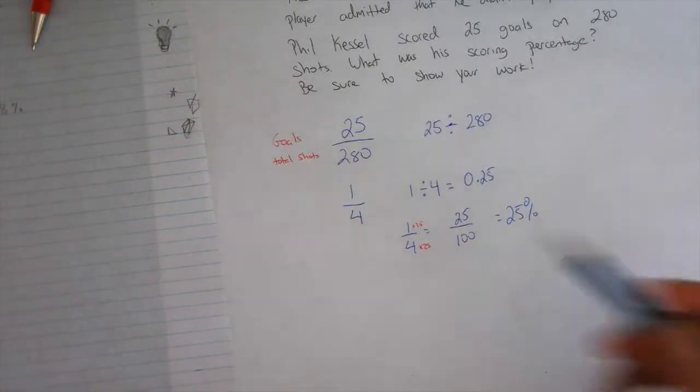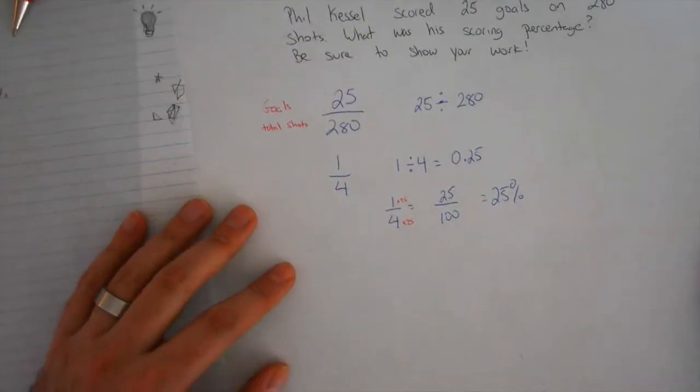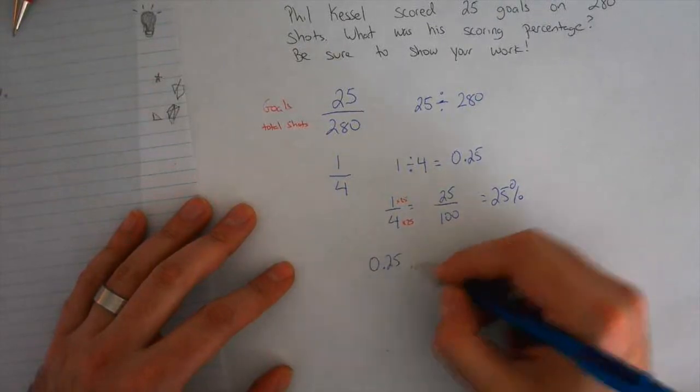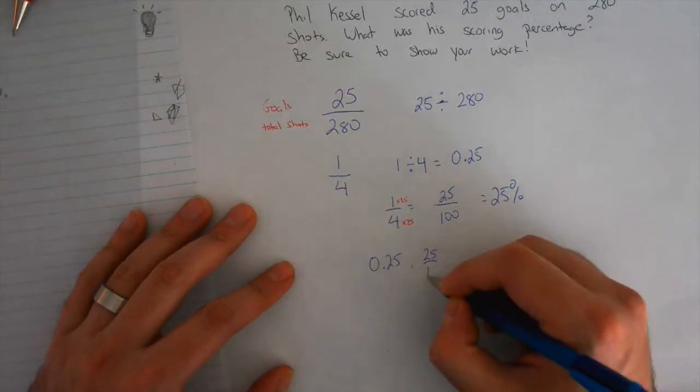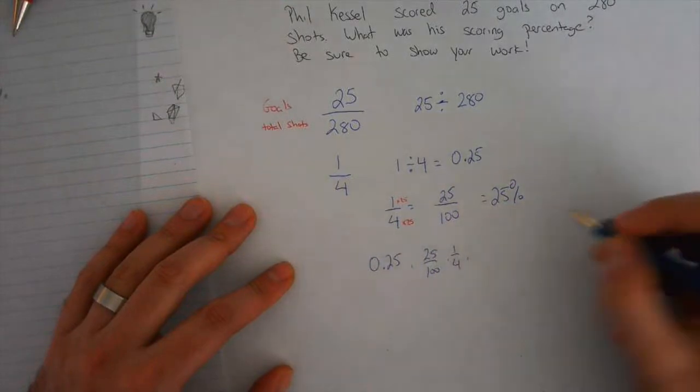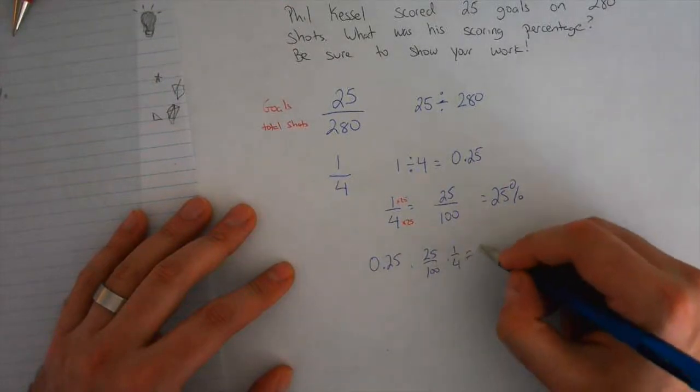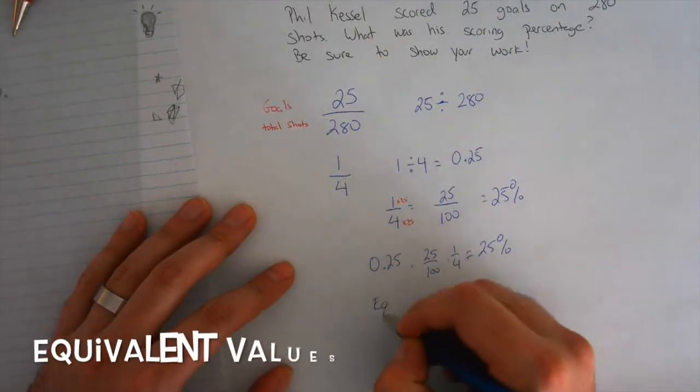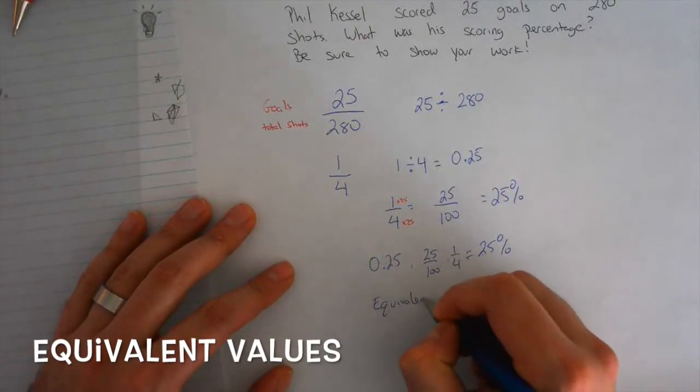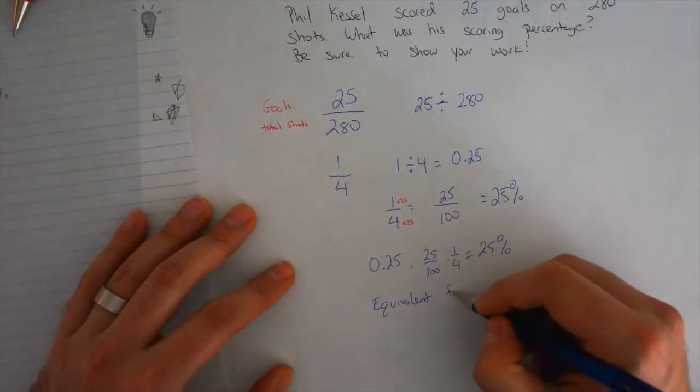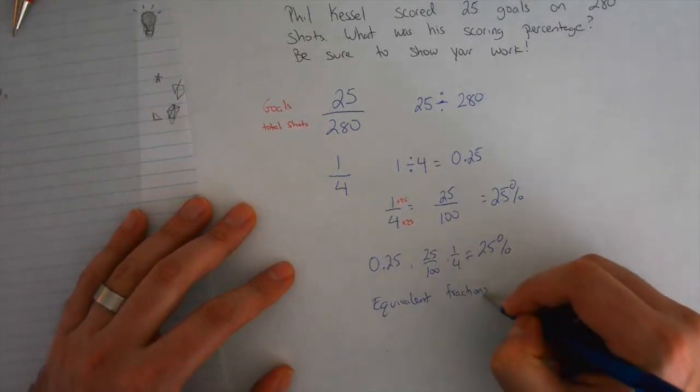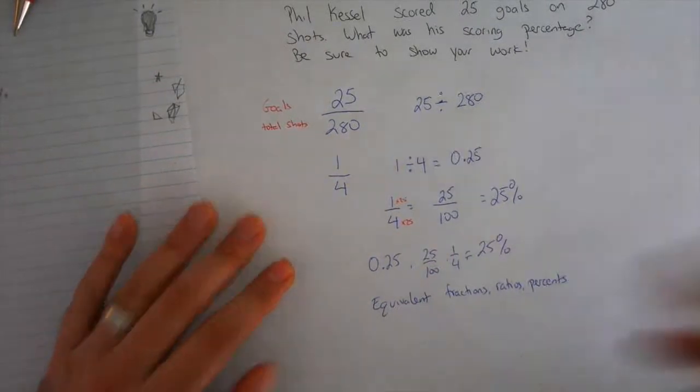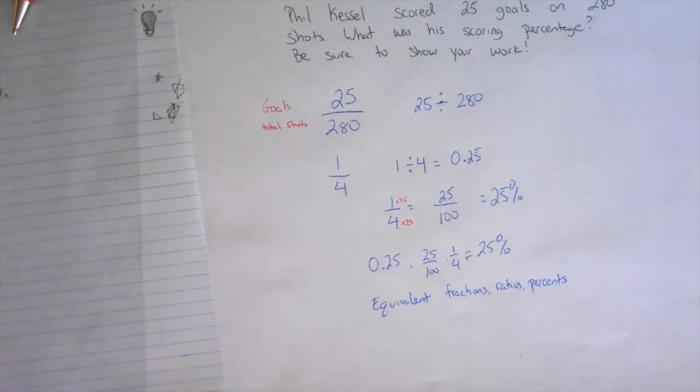Well, look at this. 0.25, 25 over 100. What percentage is that? What would be the percent? Aaliyah? 25%. It's 25%. So, 25% if I had to write this down, again, 0.25, 25 over 100, even 1 over 4, equals 25%. It's all the same. These are equivalent. These are equivalent. You can call them equivalent fractions, ratios, percents, whatever. They're equivalent.